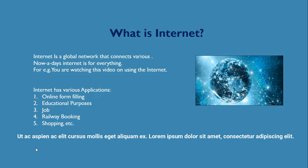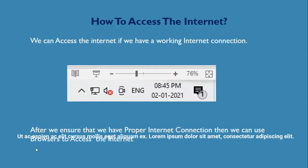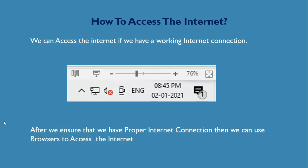So how do we access the internet? Most people have a data connection or Wi-Fi at home. Similarly on a computer you can access it through a LAN or through Wi-Fi.